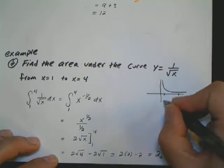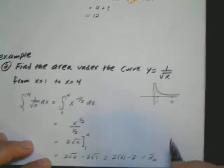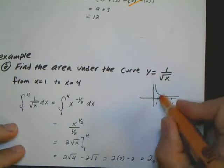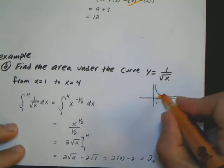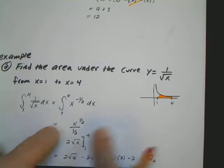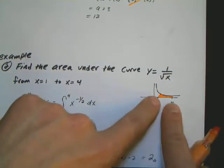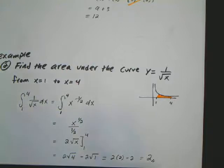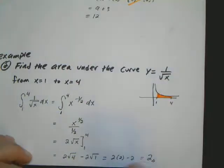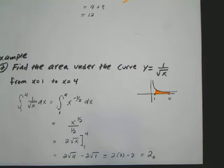So the exact area from 1 to 4 of this curve, if I were to actually shade it in, would be equal to 2 units. But you wouldn't be able to find that unless you use calculus, because there's no way you can fit a geometric shape into that. So that's the beauty of being able to find antiderivatives, is finding the exact area under a curve.